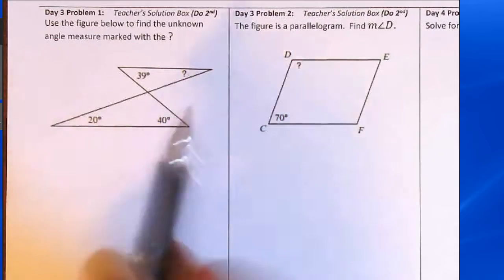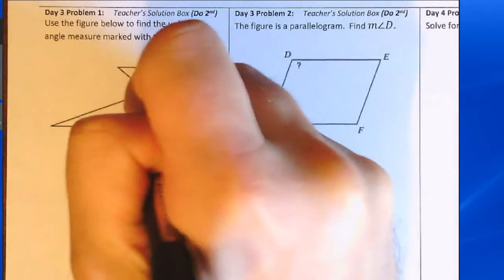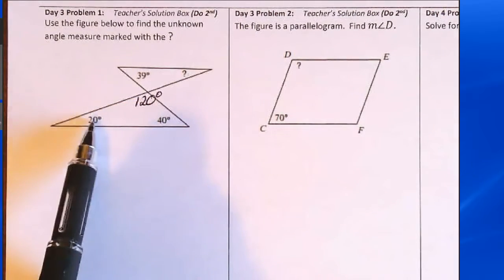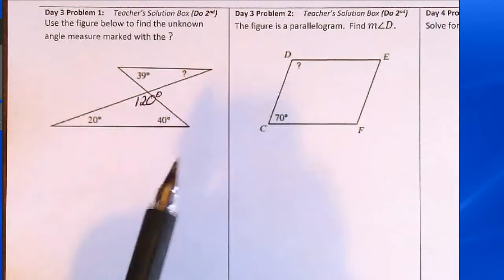20 plus 40 is 60 degrees, and so this unknown measure is 120 because 120 plus the 60 is 180.